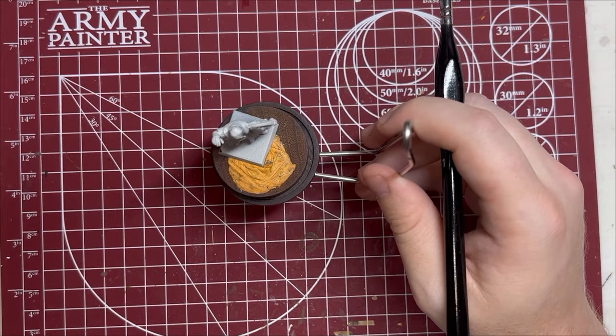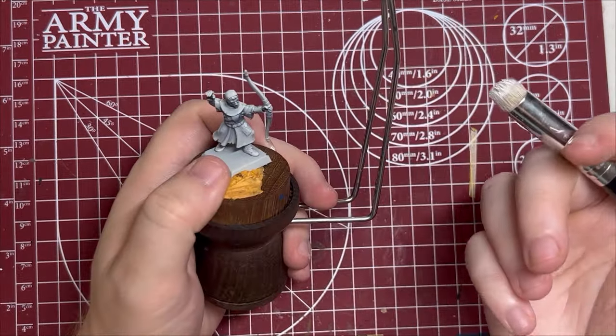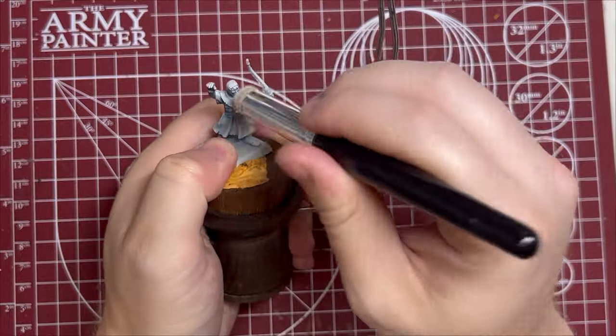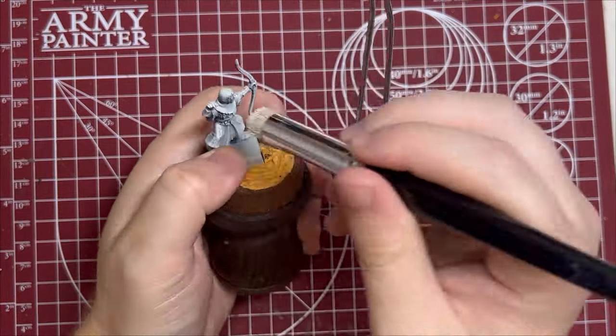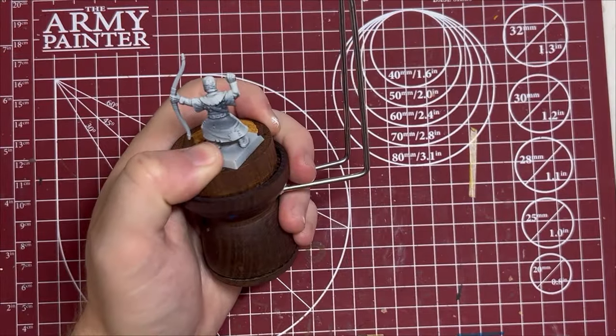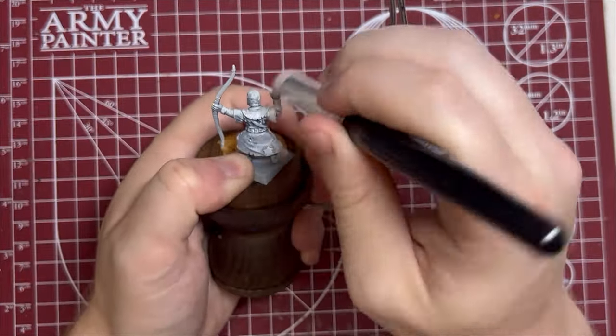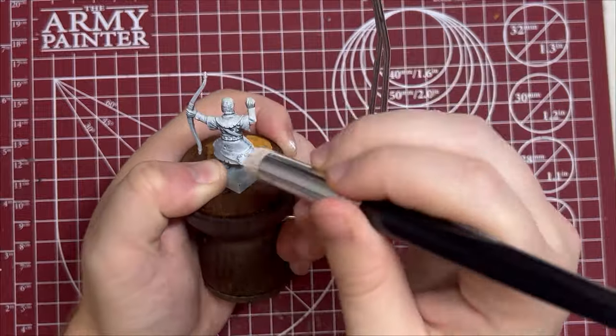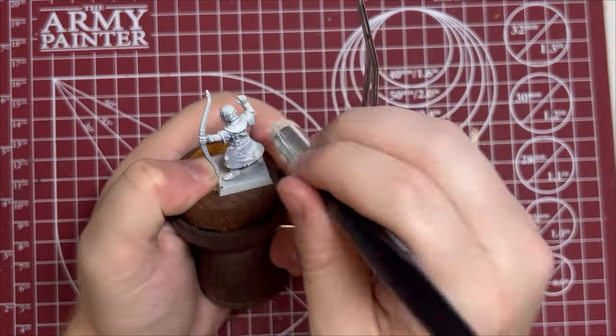So let's get started. The first thing I'm going to do is actually enhance these highlights by doing a very heavy dry brush of a pure white. I'm not very neat, I'm pretty sloppy and pretty heavy. I just want to get these tones just one more higher level there.